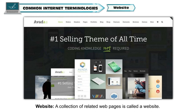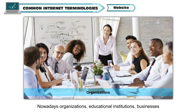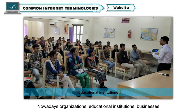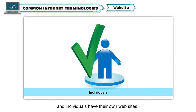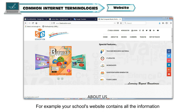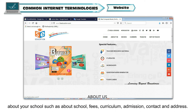Website. A collection of related web pages is called a website. Nowadays, organizations, educational institutions, businesses and individuals have their own websites. For example, your school's website contains all the information about your school, such as about the school, fees, curriculum, admission, contact and address.